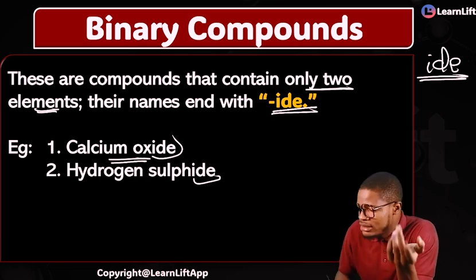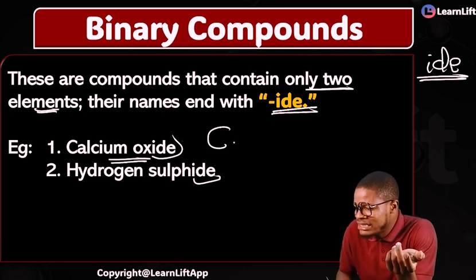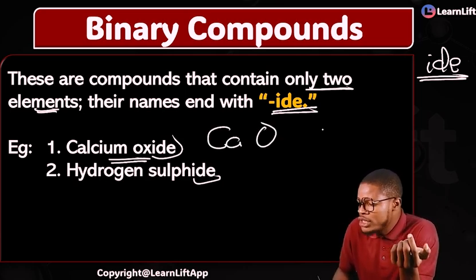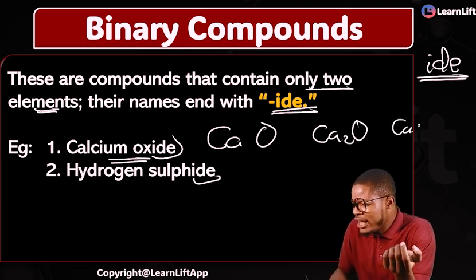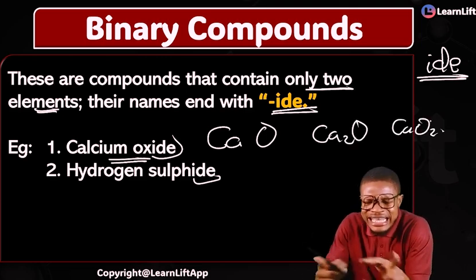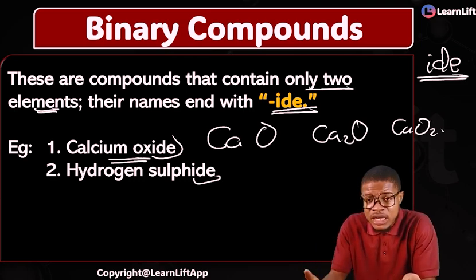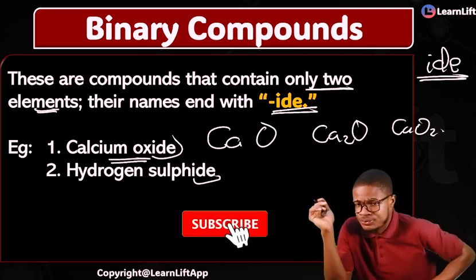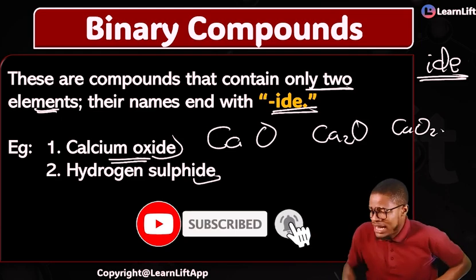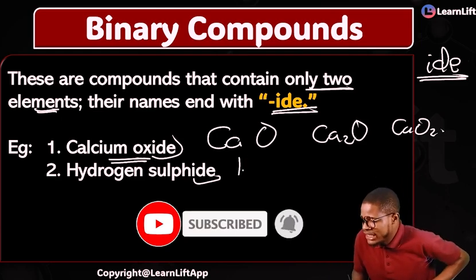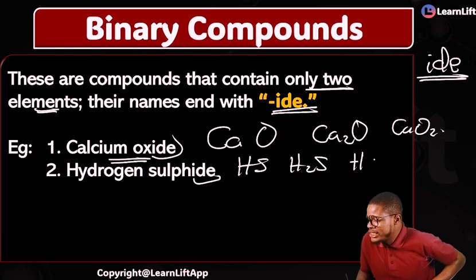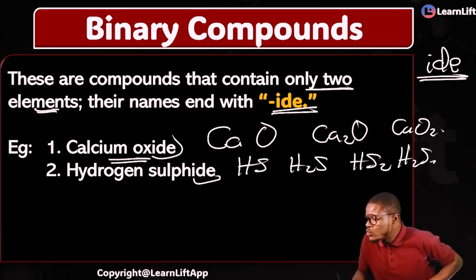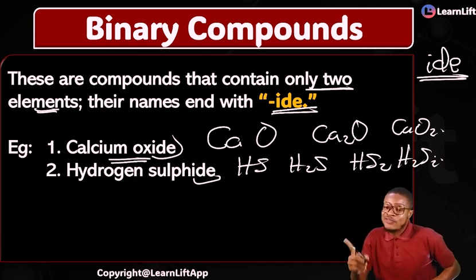The question I'm asking is: for example, calcium oxide — is it CaO, Ca2O, or CaO2? These things might seem confusing but they are very simple and I'm going to show you. Similarly, hydrogen sulfide — is it HS, H2S, HS2, or H2S2? I'll show you how to determine the correct formula.